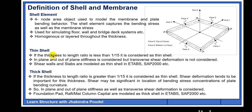For thick shell, just the opposite of thin shell: if the thickness-to-length ratio is greater than 1/15, it is considered as thick shell, and shear deformation tends to be important. Shear may be significant where bending stress concentration or plate bending curvature is high. In-plane and out-of-plane stiffness as well as the transverse shear deformation are considered in thick shell, whereas in thin shell only in-plane and out-of-plane stiffness are considered. Foundation pads, reactor mats, and column capitals are modeled as thick shell in ETABS, SAP2000, or other finite element software.